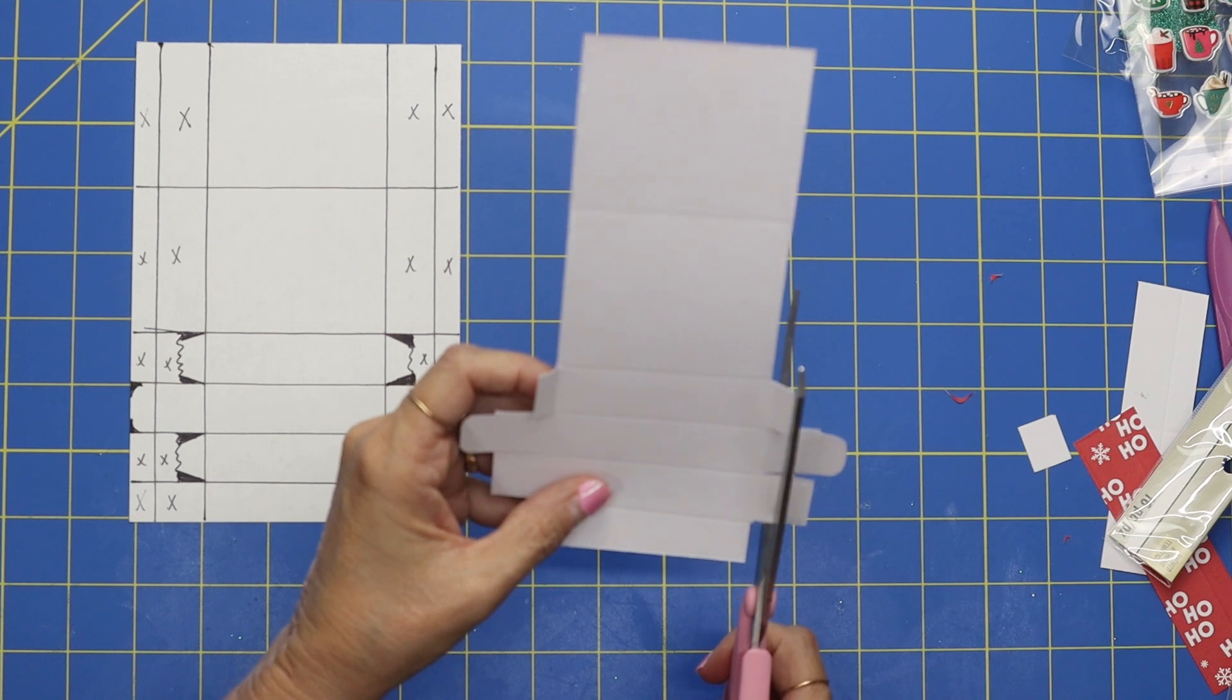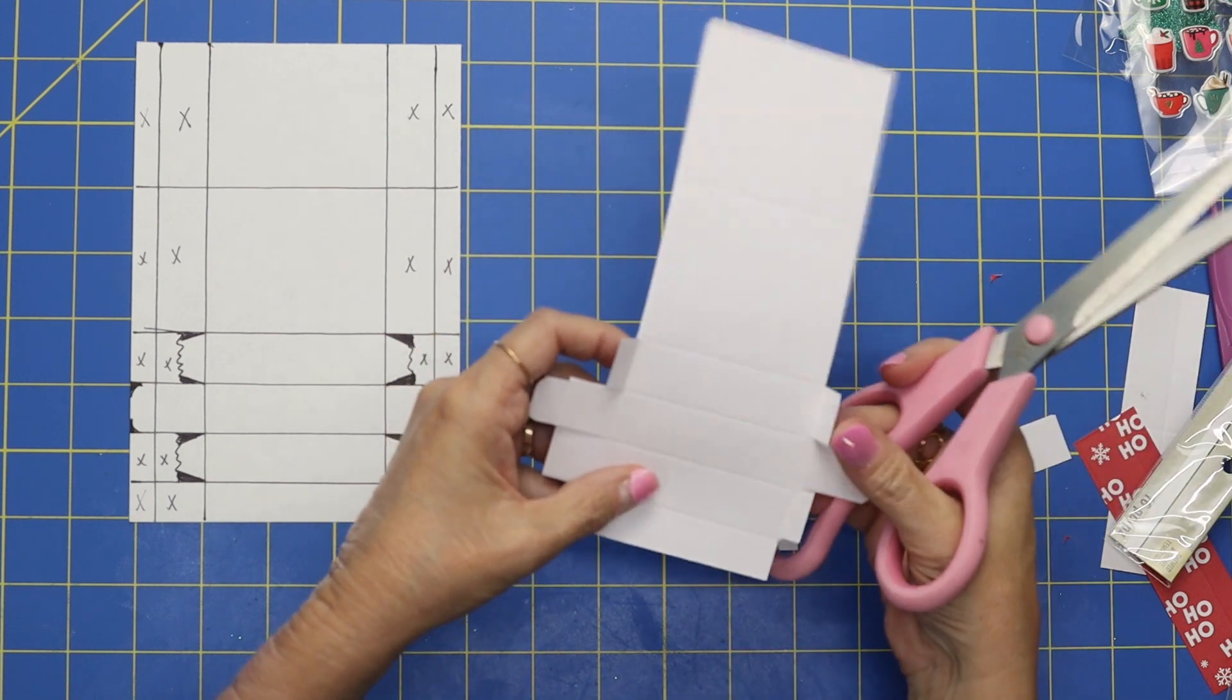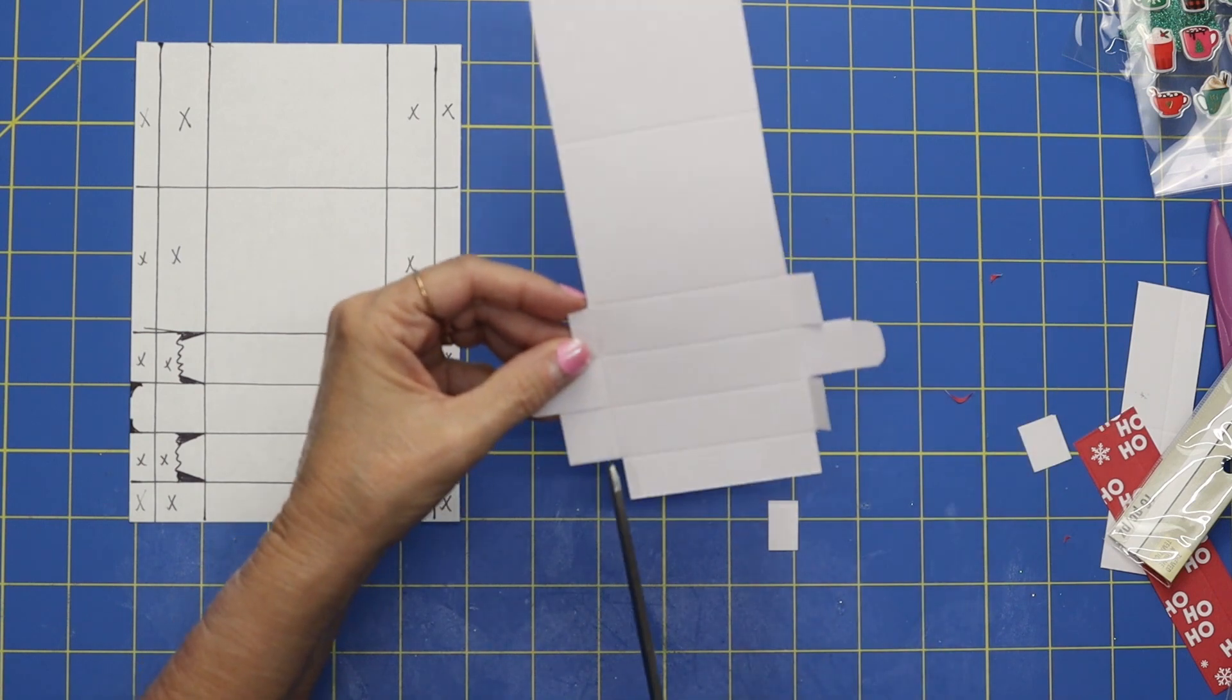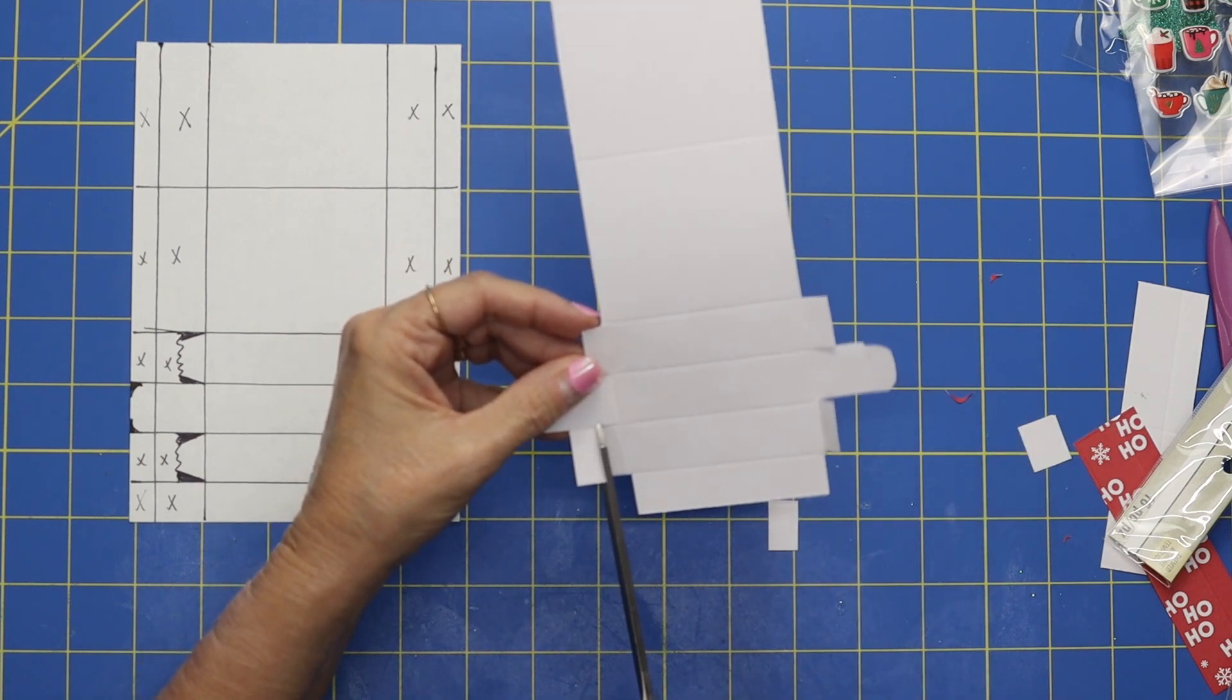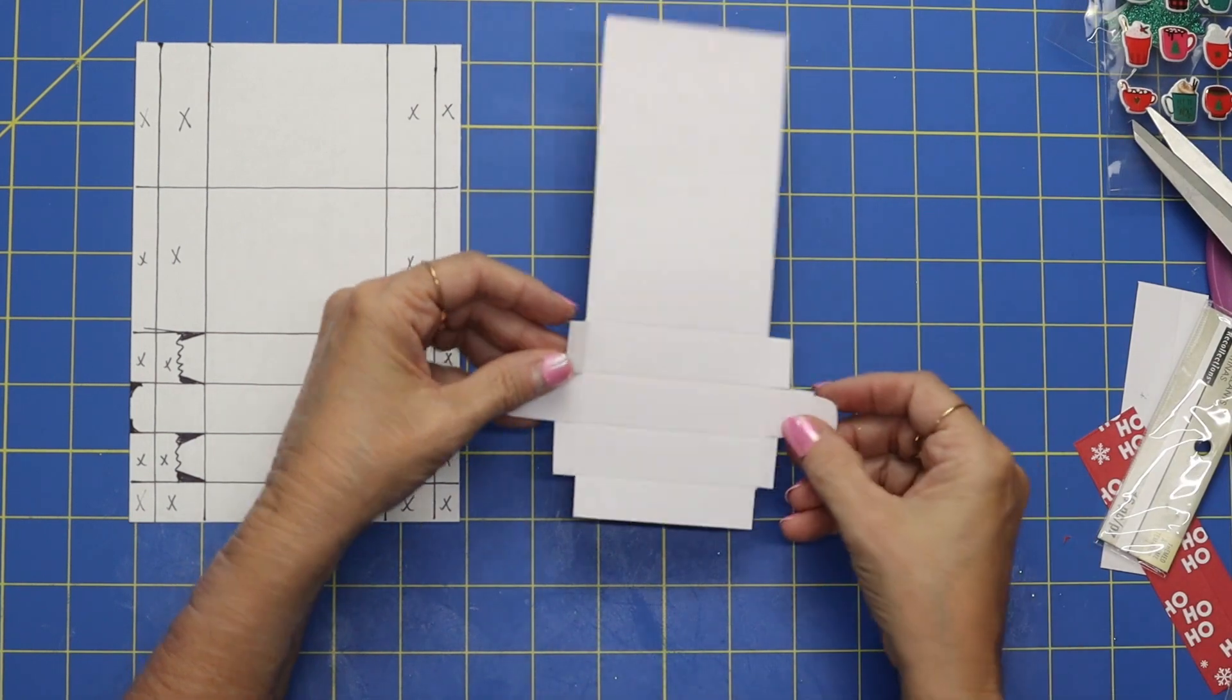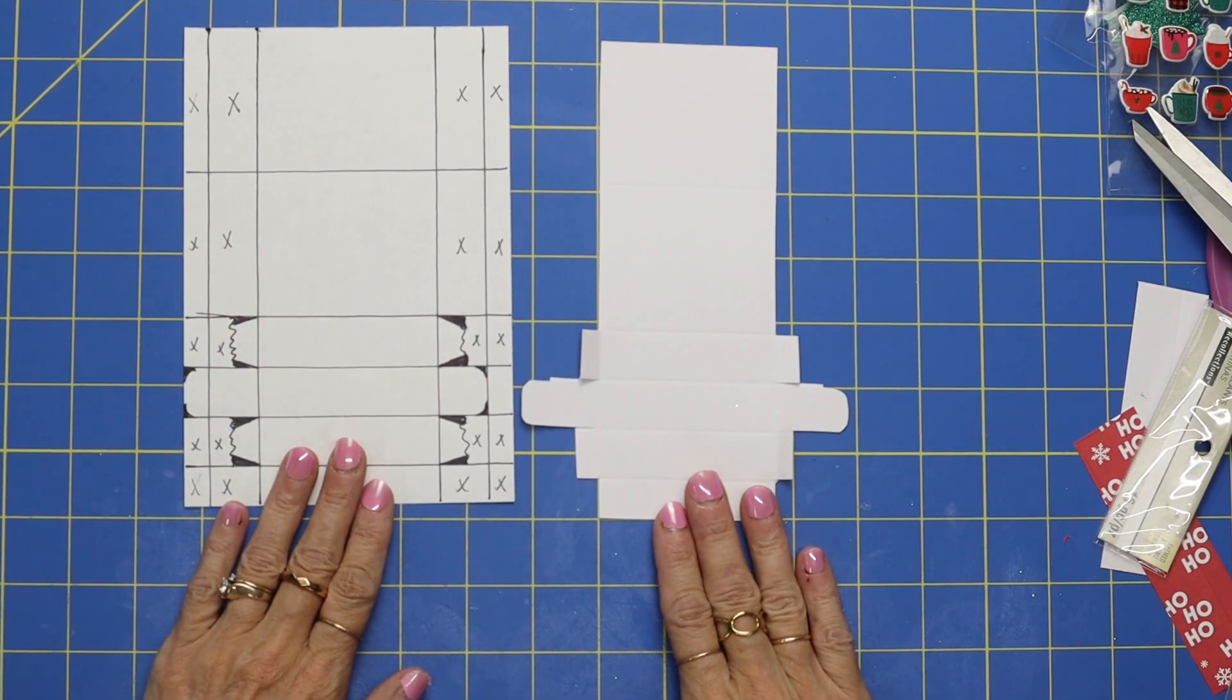You don't have to be exact, but just kind of line it up to how we did this one. So just cut about half of it off. We're just trying to get rid of some of that bulk. Now does this make sense? I hope I didn't lose you.